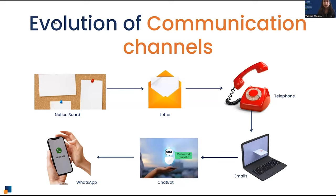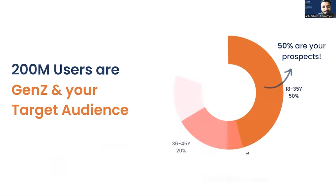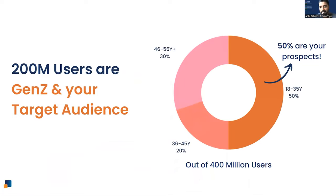Now let's talk about stats relevant for the education industry. In India there are 400 million WhatsApp users, and the 18-to-35 age group comprises 50% of WhatsApp usage — meaning there are 200 million daily active users who are Gen Z and your target audience. A lot of these users in the 18-to-35 age group are course buyers, and many parents of school-going kids are also there.